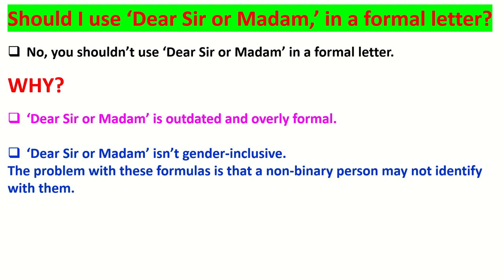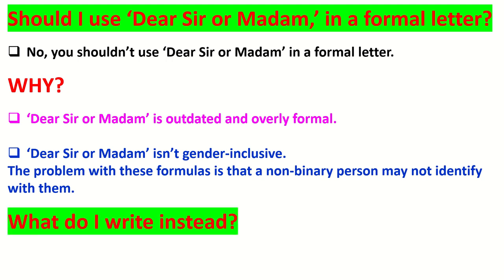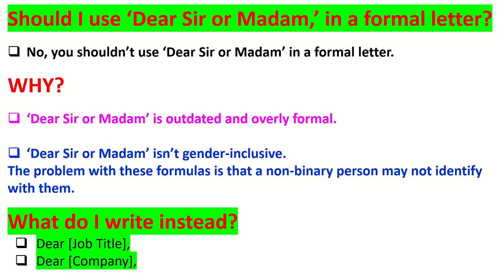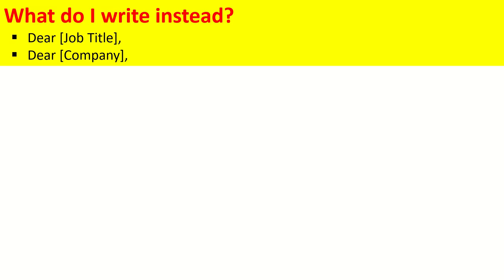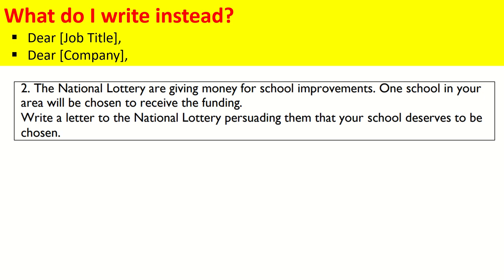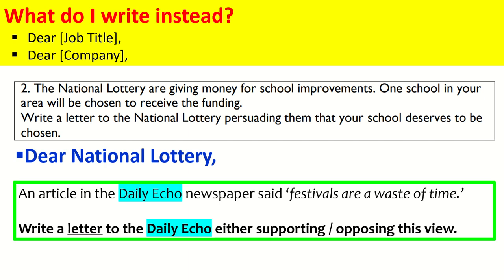So what do you write instead? The two easy alternatives are to use the dear job title of the person — for example, dear manager, editor, or principal — or dear company name: dear Daily Echo, dear Sky, dear Apple. For a National Lottery question, we'd put 'dear National Lottery.' For our question about the Daily Echo and festivals, we'd put 'dear Daily Echo,' or you could put 'dear editor.'